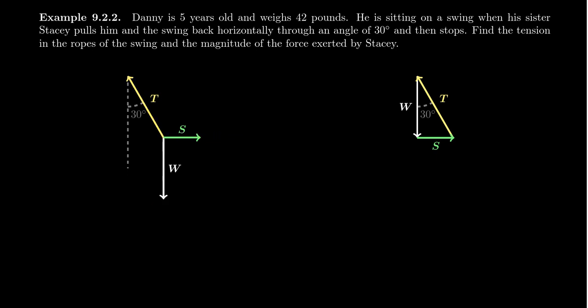Now, in this format, it might not be exactly sure what we're going to do with this thing here. But what we want to do is we want to find out the tension of the ropes, of the swing. Like, how hard is the rope pulling Danny? And also, how hard is Stacy pulling Danny? What are the magnitudes of these vectors? Now, the weight vector is pretty easy. That was given to us.